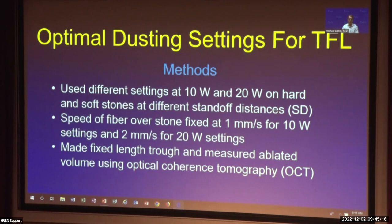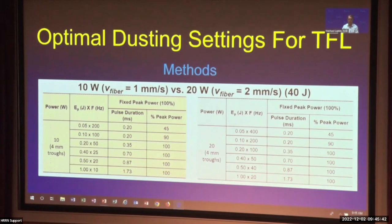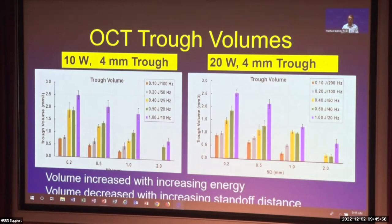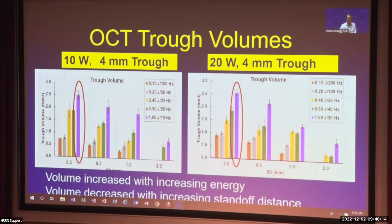We used different settings at hard and soft stones at different standoff distances, as for the holmium laser we found that a standoff distance of 0.5 millimeters was ideal for dusting. We fixed the fiber speed at 1 mm/sec for 10 watts and 2 mm/sec for 20 watts, made fixed trough lengths, and measured the ablated volume using optical coherence tomography. The OCT craters show that as energy increases for the same wattage, the trough volume increases — 0.5 joules had the largest trough volume. Comparing different settings at different standoff distances, 1 joule had the highest trough volume irrespective of standoff distance.